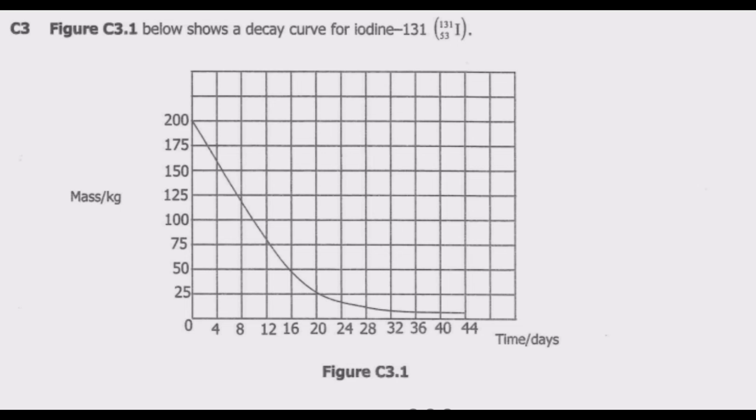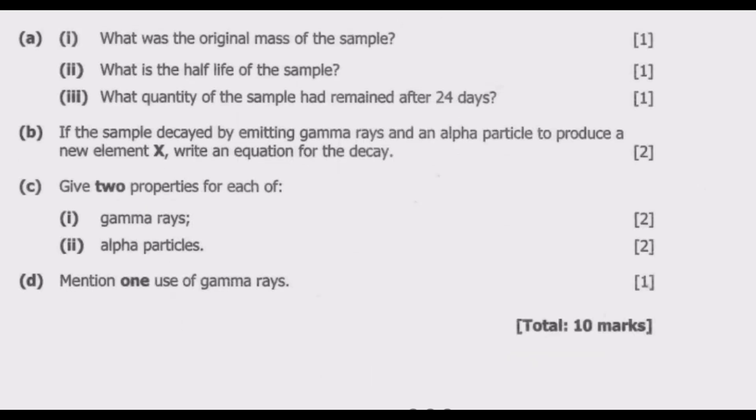Let us look at question C3 which is the last question of this paper. Figure C 3.1 below shows a decay curve for iodine-131. We have mass in kg, time in days, the graph starting from 200, and the last day is 44.